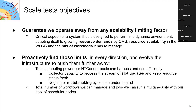Every year we execute scale tests with the objective to guarantee that we operate away from any scalability limiting factor. One key goal is to find those limits in practice and make sure the collector has the capacity to process the stream of slot updates, and that the negotiator matchmaking time stays under control to avoid resources sitting idle on worker nodes for long periods without being matched, so we can use available CPUs to their full potential.